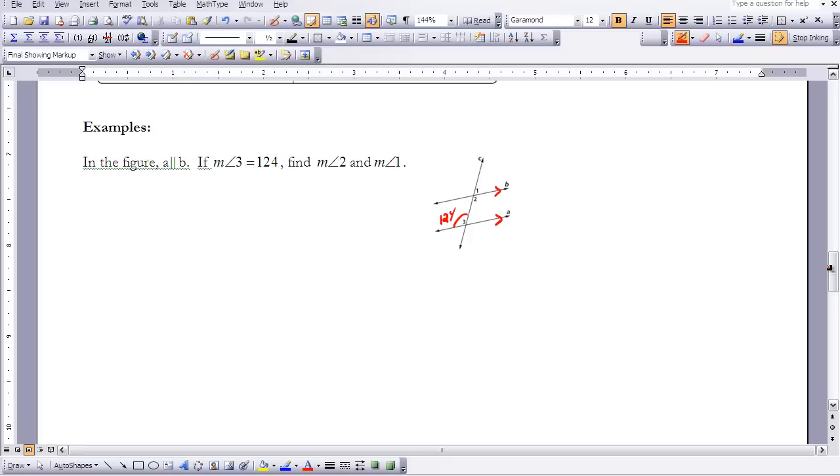So if I know that angle three is equal to 124 degrees, I know that angle two is an alternate interior angle. And I know that those are equal if my lines are parallel.